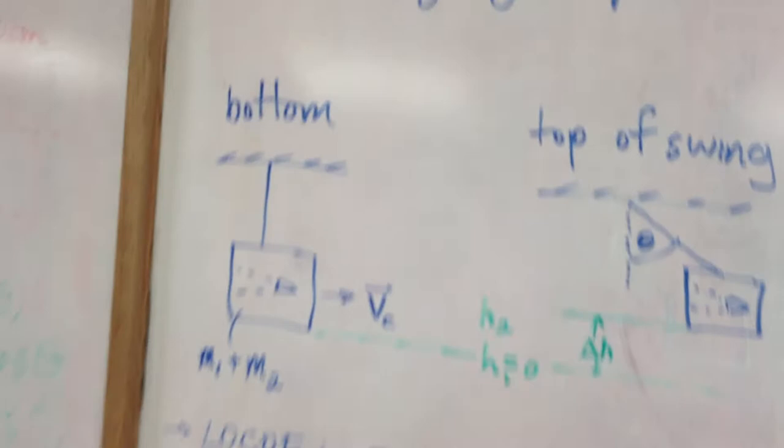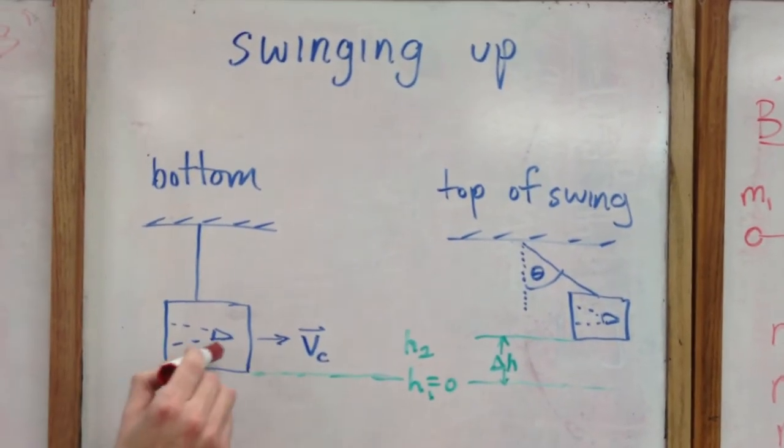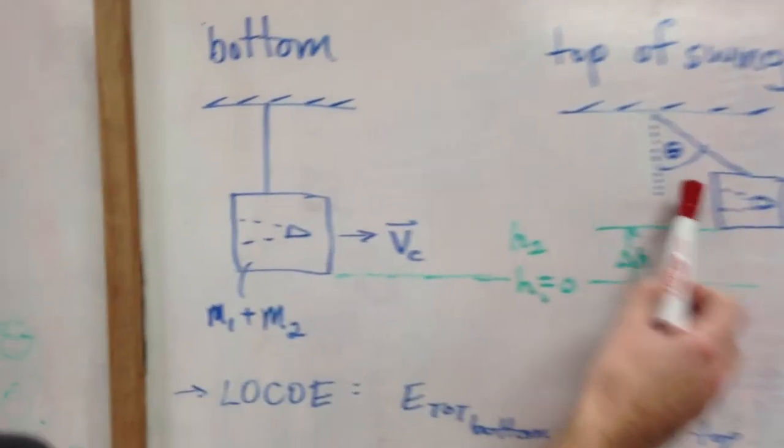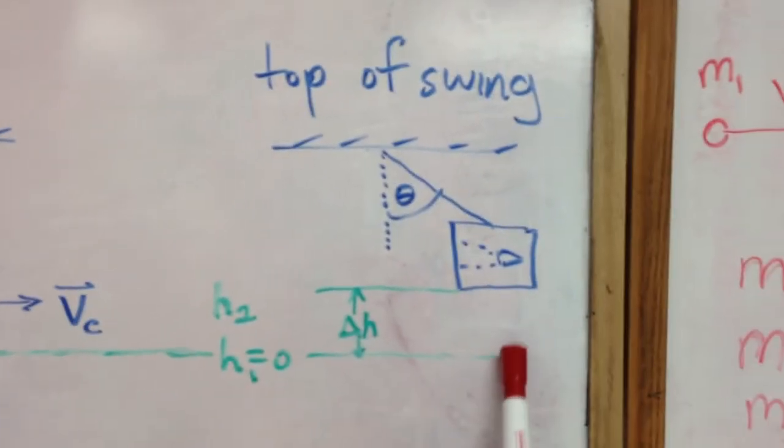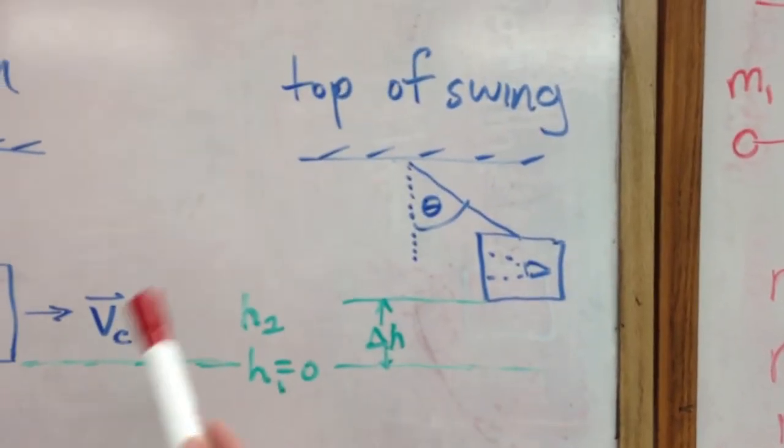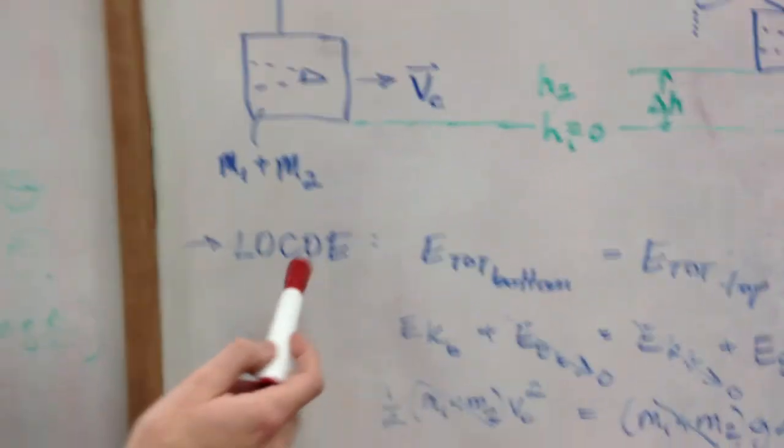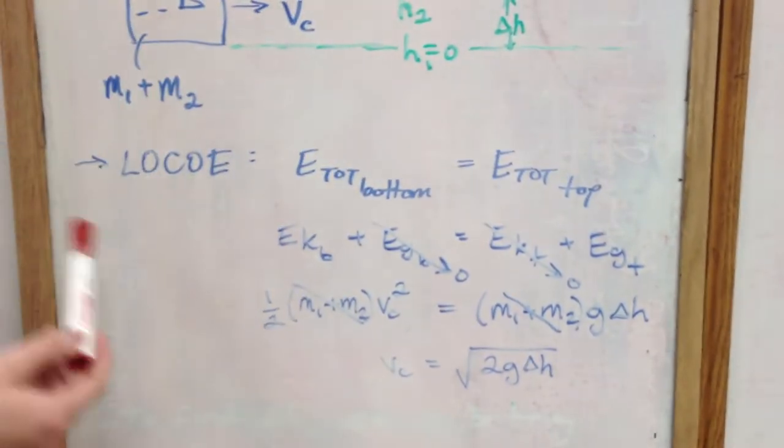Moving on, after the boxes have collided, the box is about to move forward and swing upwards and achieve some kind of height in the y direction. Looking at the law of conservation of energy, we're going to compare the energies of the first situation with the energy of the second situation.